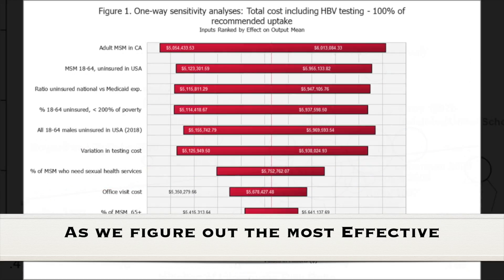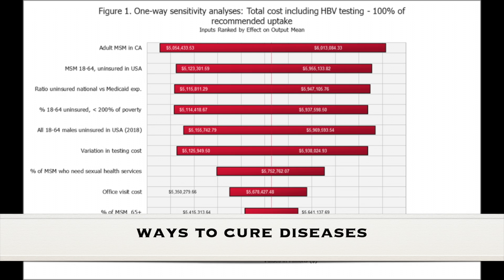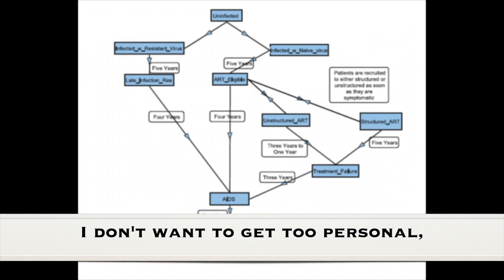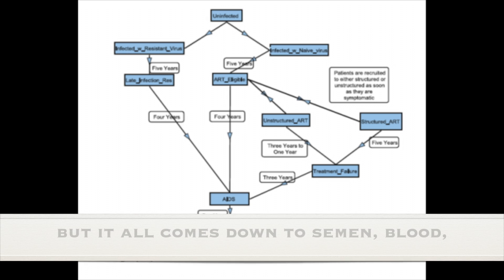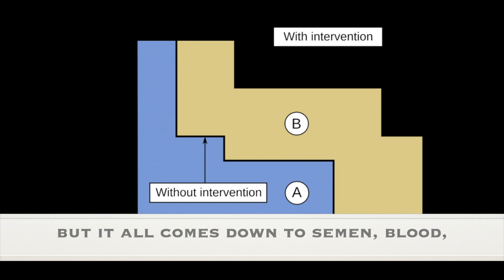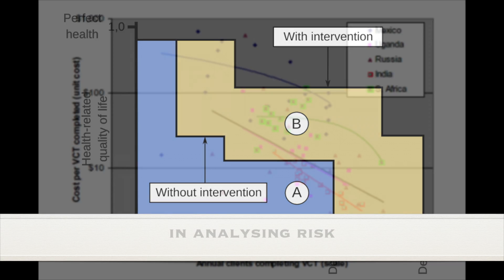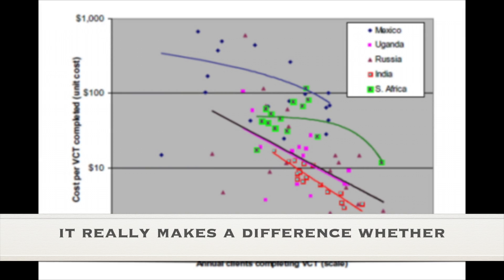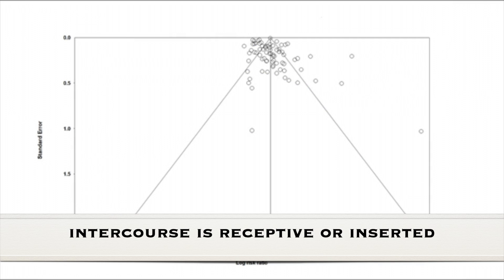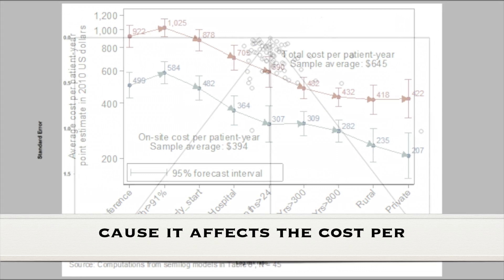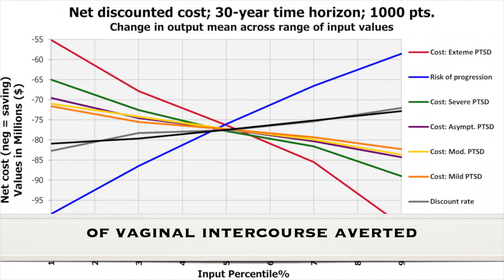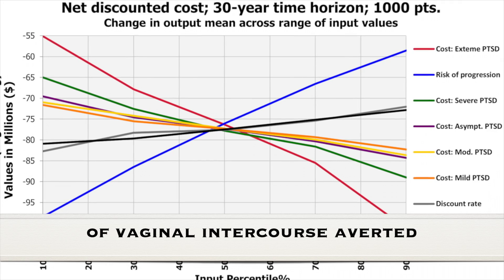As we figure out the most effective ways to cure diseases, be ready to descend into the pit. I don't want to get too personal, I hate to be so graphic, but it all comes down to semen, blood and spit. For instance, in analyzing risk, it really makes a difference whether intercourse is receptive or inserted, because it affects the cost per incremental unprotected episode of vaginal intercourse averted.